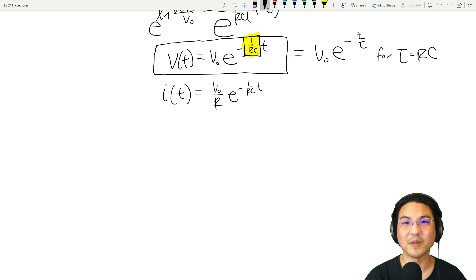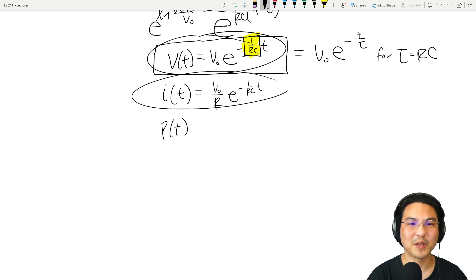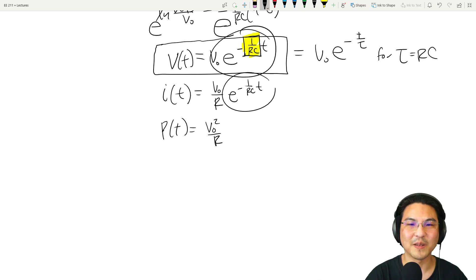All right, so that's the current going through the resistor. What's the power? Voltage times current. Just multiply these two together. So let's multiply those together. There we have V naught squared over R. This times this, so there's two of those: e to the minus 2 over RC. So that's the power.